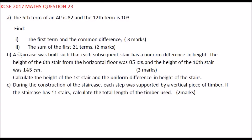Question number 23: The fifth term of an AP is 82 and the 12th term is 103. Find the first term and the common difference. The general format of a term is written like this: A plus N minus 1 into bracket D. So for the fifth term, we write A plus 5 minus 1 is 4, D is equal to 82.